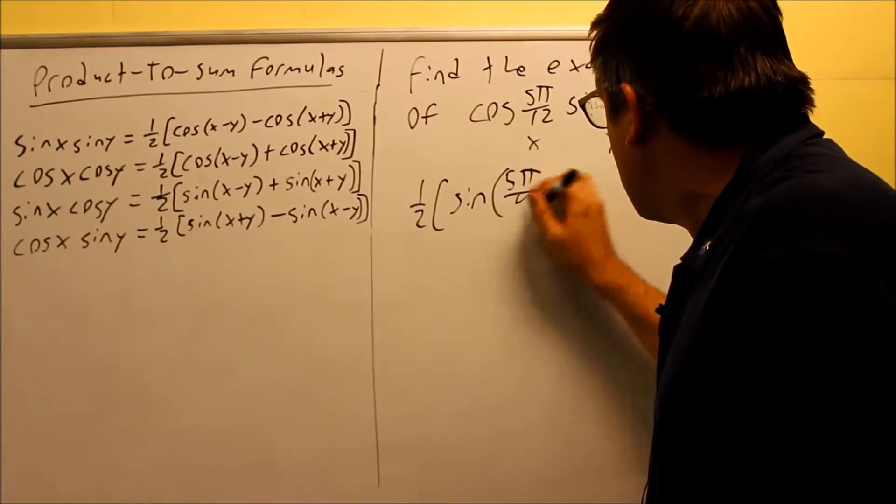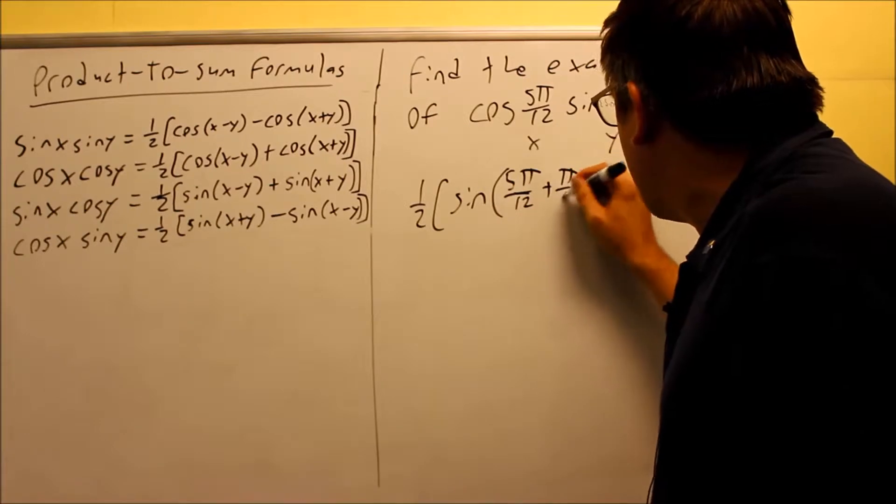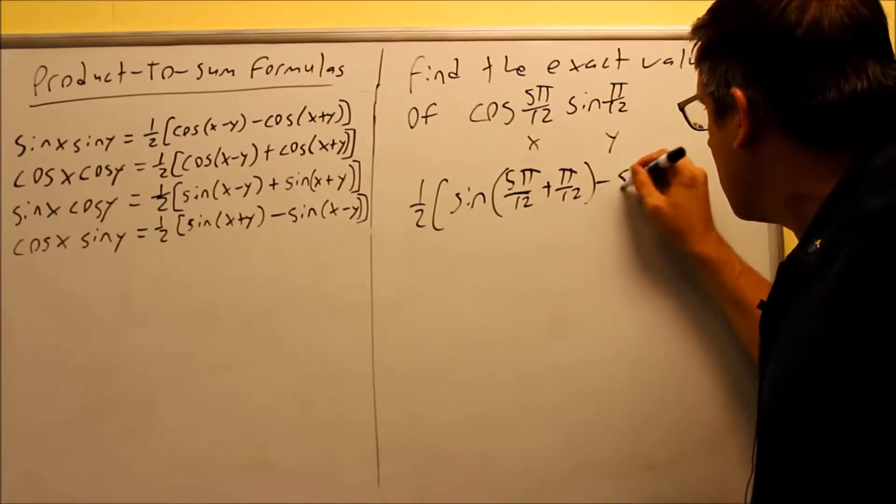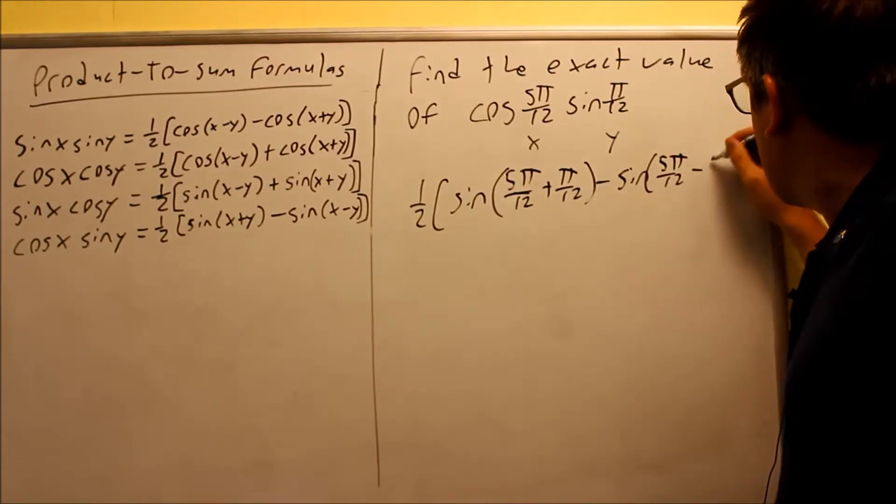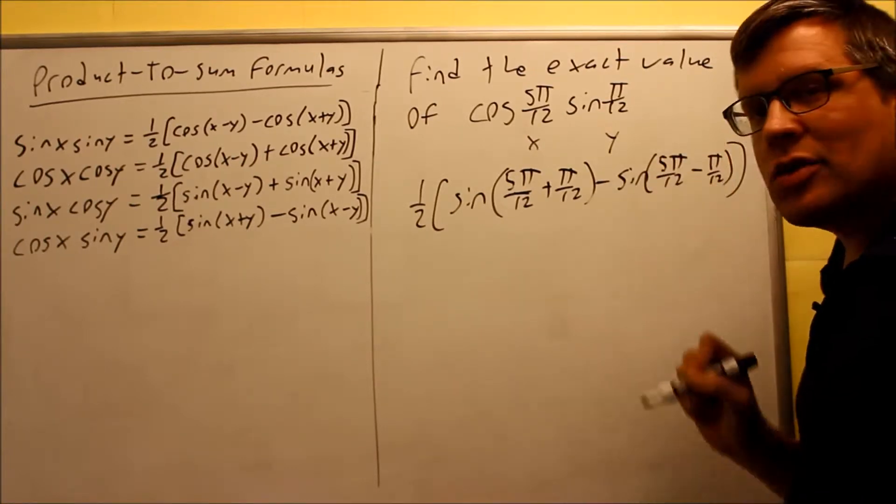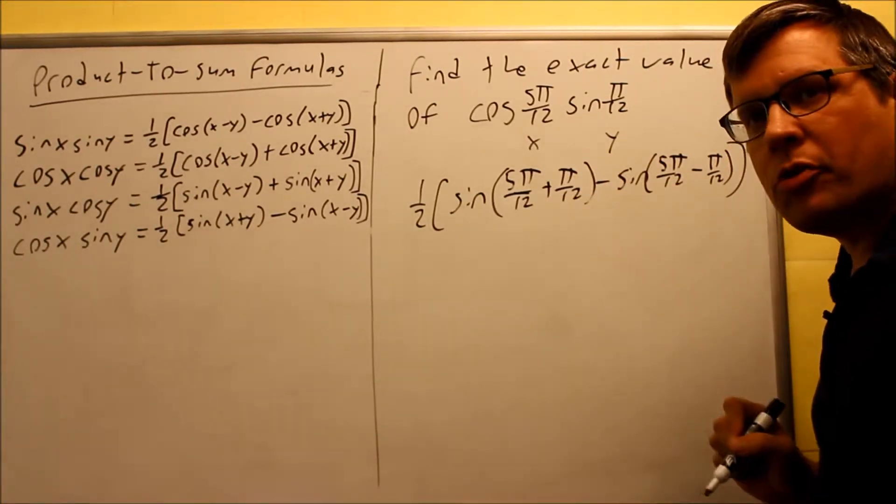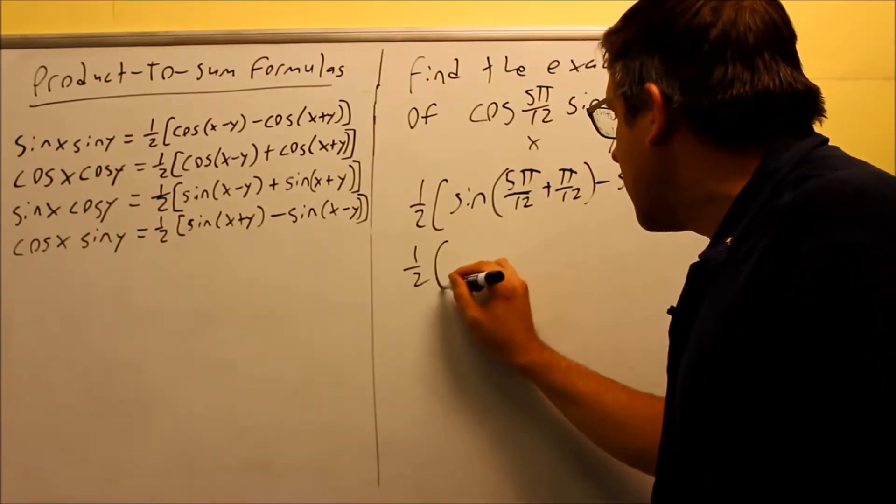So we're going to put in 1/2 sine of x plus y: 5π/12 plus π/12, and then minus sine of 5π/12 minus π/12. I'm putting in x = 5π/12 and y = π/12, just putting it into the formula here. We're going to work this out and that's going to give us the exact answer.